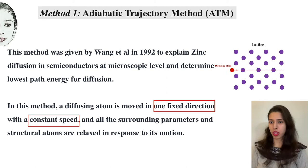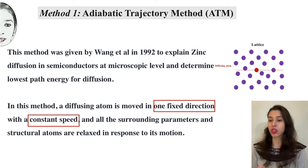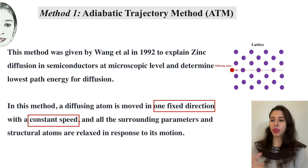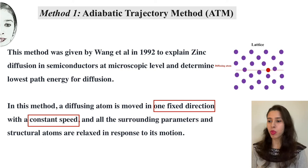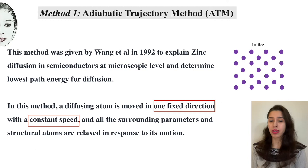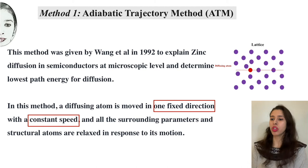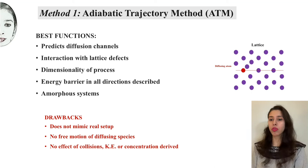The first method to study computational diffusion simulation was the Adiabatic Trajectory Method, ATM. It was given by Wang in 1992 to explain zinc diffusion in semiconductors. As you can see in the animation, a diffusing atom — the red one — is moved in one fixed direction with a constant speed, and all the surrounding structural atoms are allowed to relax in response. The position, speed, and direction of the diffusing atom are kept constant.